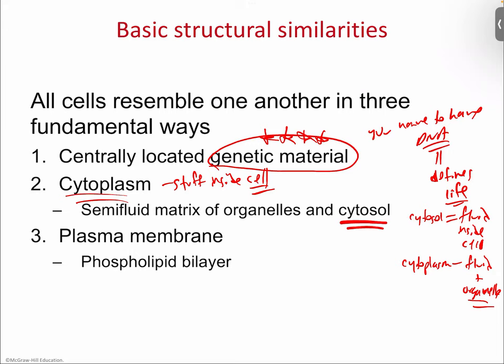So cytoplasm is the term to use, containing organelles and things of that nature. The other thing all cells need is a plasma membrane — because everything inside the cell needs the actual cell boundary. The plasma membrane is what we get effectively for free during the formation of the phospholipid bilayer.